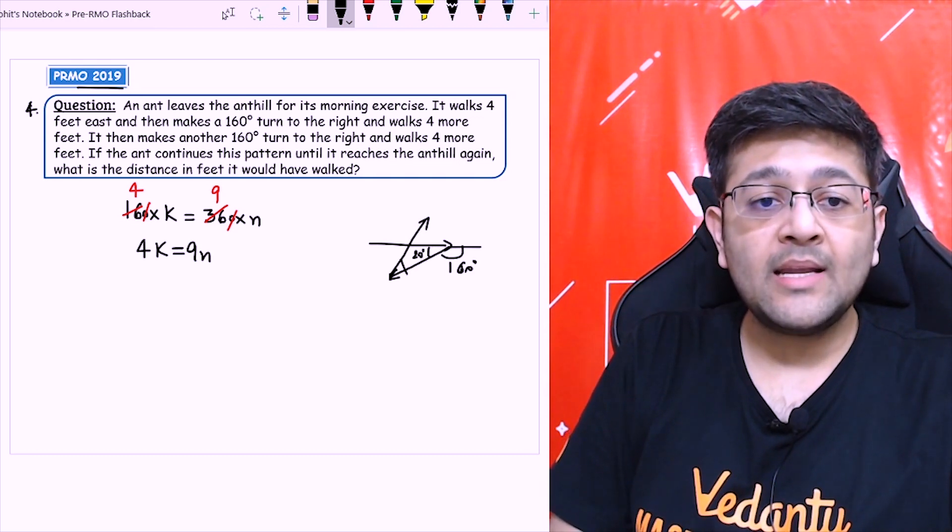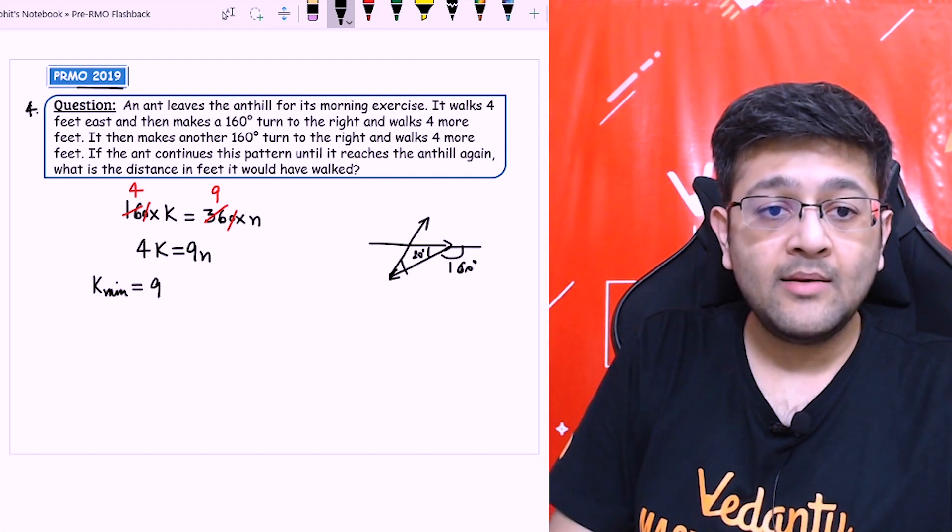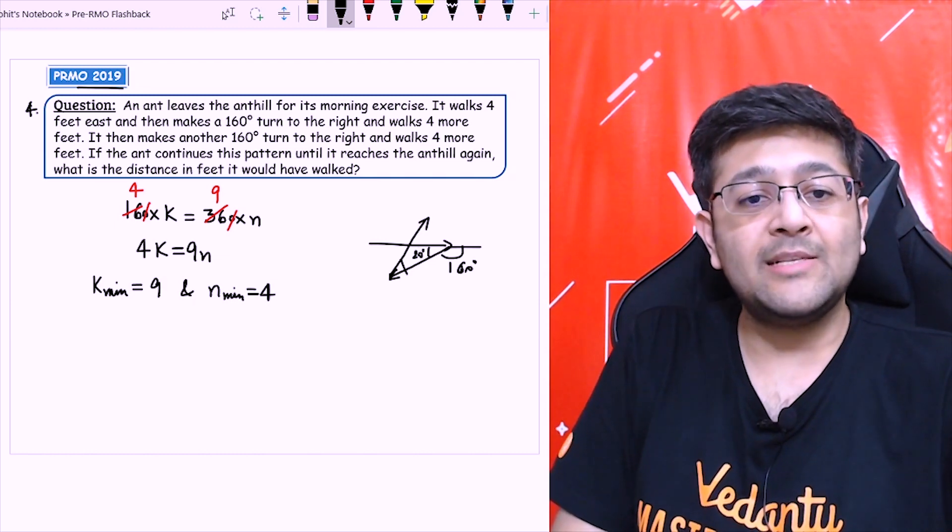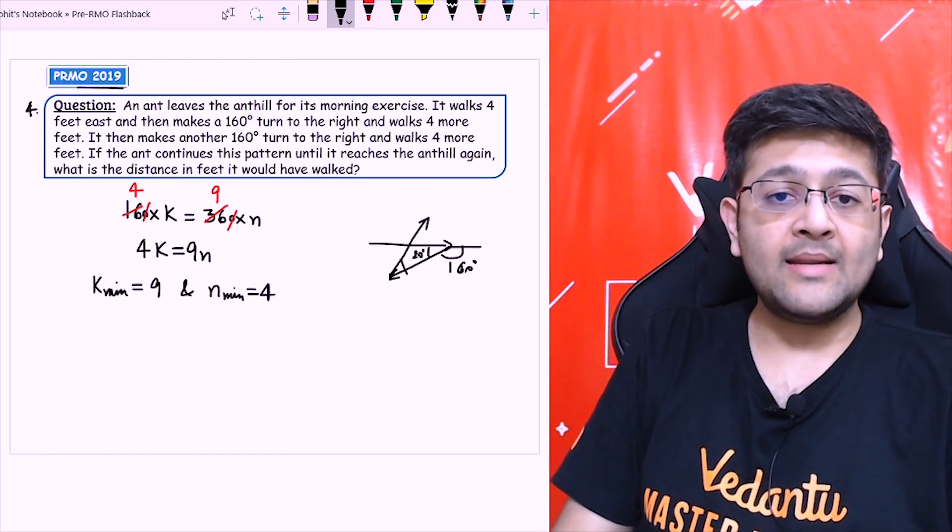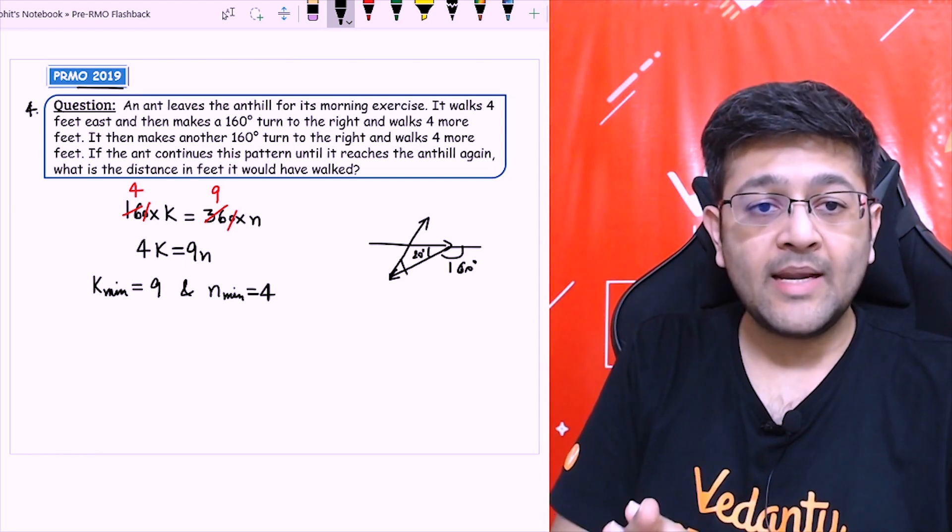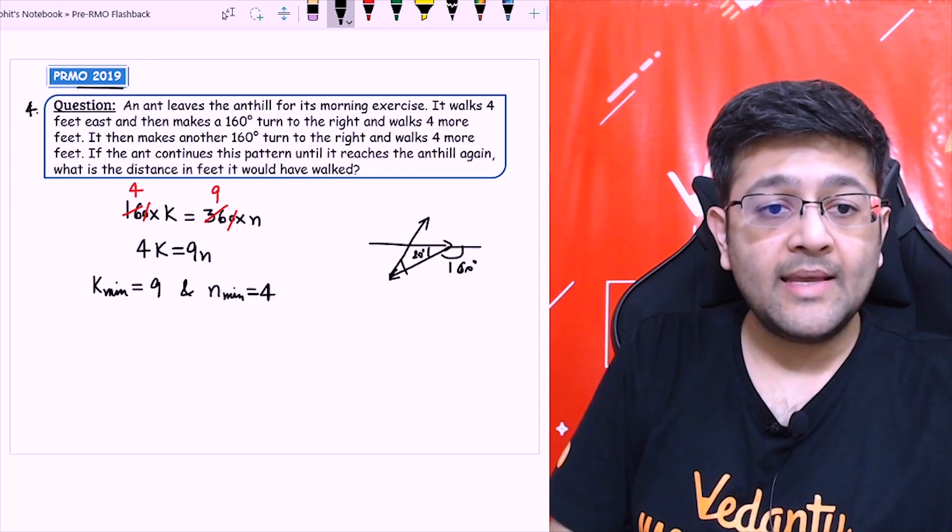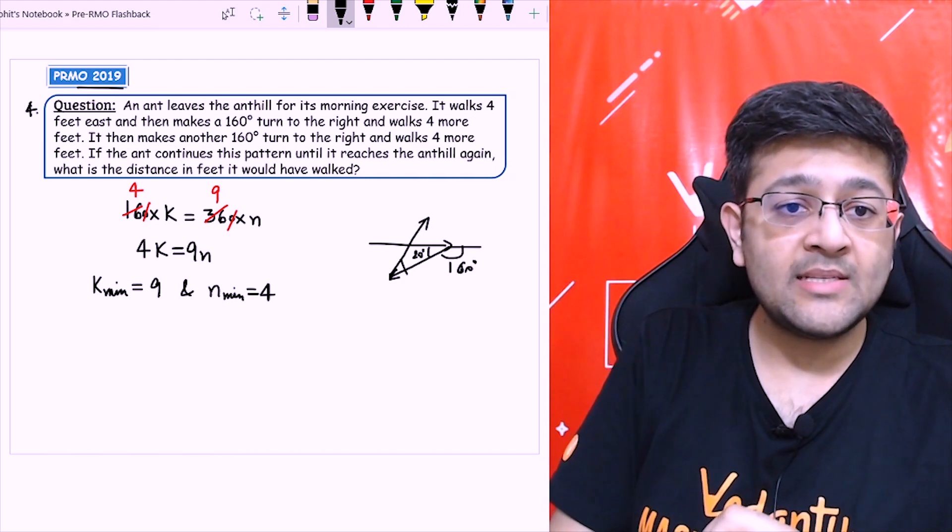In this case, because 4 and 9 are co-prime, I can say the minimum value of k will be 9 and similarly minimum value of n should be equal to 4 for both of these expressions to be equal. So k minimum is 9, it means ant has taken total 9 turns. So after 9 times, it has reached to the anthill again. The distance covered by ant we have to find.